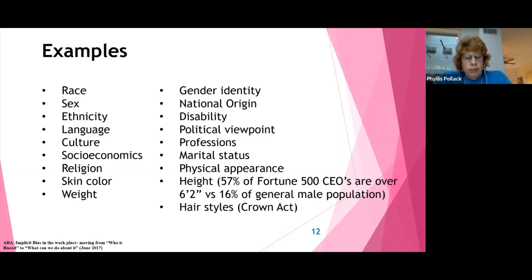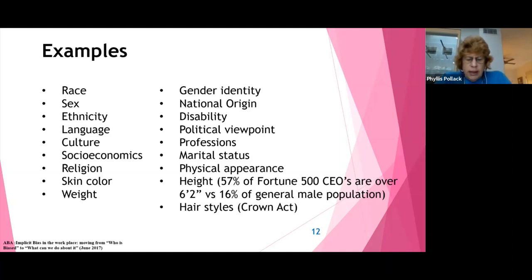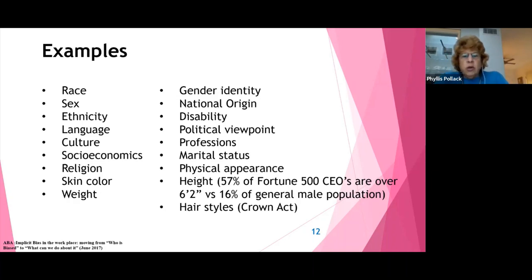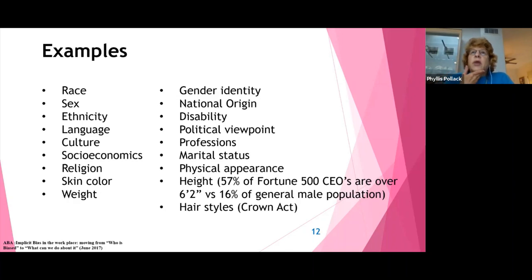The Crown Act was signed by Governor Newsom in California on July 3, 2019. The notion of hairstyles as an implicit bias came to the fore in approximately December of 2018 in a news article about a New Jersey high school wrestler. He was in a match and he had dreadlocks, and the white referee gave him an ultimatum to either cut his dreadlocks or forfeit the match. He did cut the dreadlocks in order to proceed with the match.